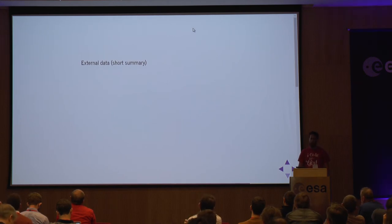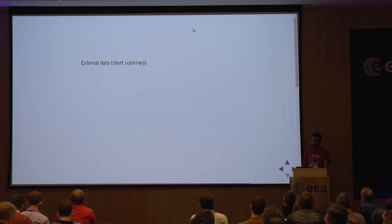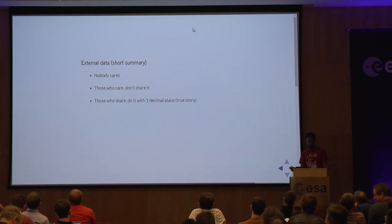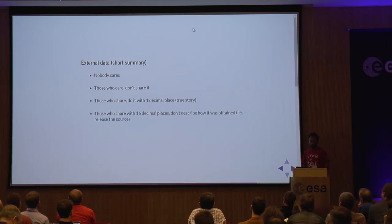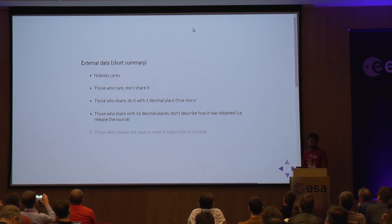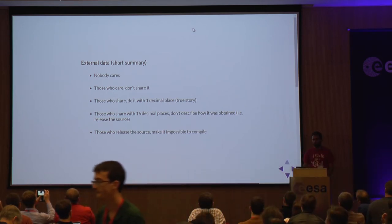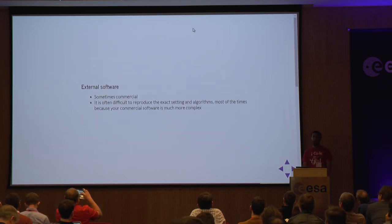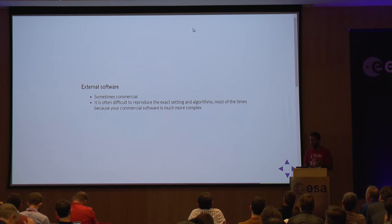There's also the issue of external data quality. For the previous example I have a textbook exercise, but for more complex cases you must go to the scientific literature. My observations: first, nobody cares about providing data; those who care don't share it; those who share it do so with only one decimal place — a true story; those who share 16 decimal places don't describe how it was obtained; and those who release source code make it impossible to compile. The situation out there is pretty bad. An alternative is to use external software like ORCID or SPICE.